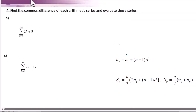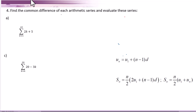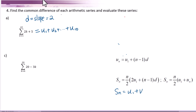Let's go to question 4. Find the common difference of each arithmetic series and evaluate this series. We do know the common difference equals slope equals 2. This sigma notation means u sub 1 plus u sub 2 until u sub 10. S sub n means u sub 1 plus u sub 2 plus u sub n. So this equals S sub 10.